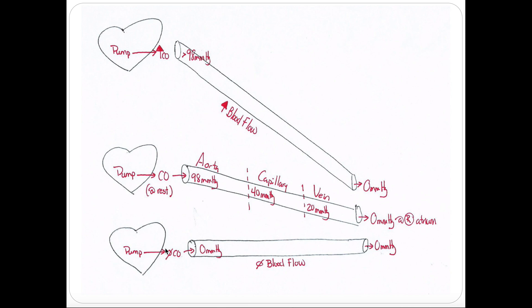Liquids always flow from high pressure to low pressure. This is analogous to diffusion — particles moving from high concentration to low concentration, always high to low. So if both points are at the same pressure, there's no high pressure to drive flow. Always keep in mind that liquids move from high pressure to low pressure.